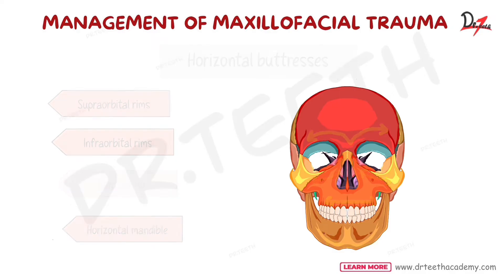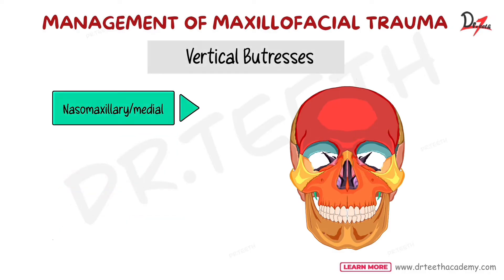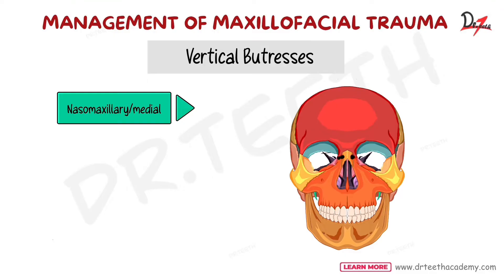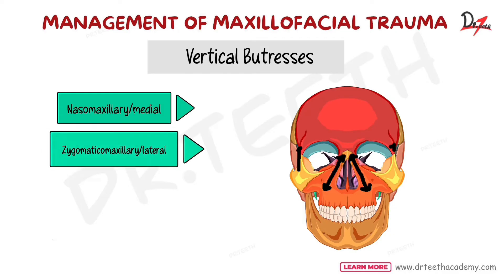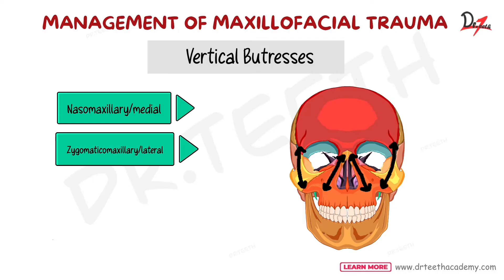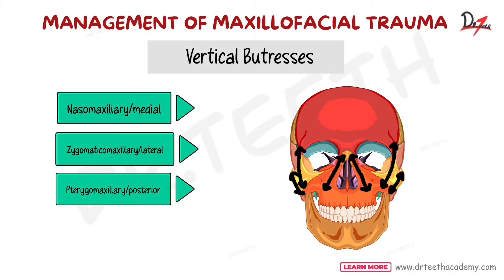The vertical buttresses are the nasomaxillary buttress, which starts from the canine to the piriform aperture to the frontal process. Then we have the zygomatic buttress, which starts from the first molar region and goes till the zygomatic process. Then we have the pterygomaxillary buttress and the vertical mandible.